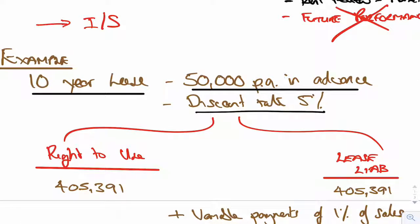you had a right to use assets of 405,391 and a lease liability of 405,391. Obviously that one then just went over to there, didn't it?